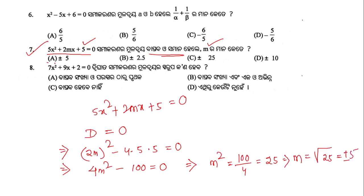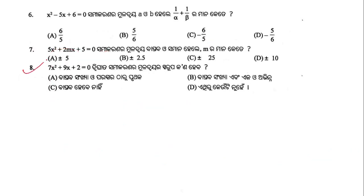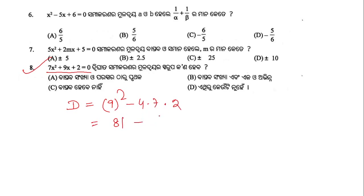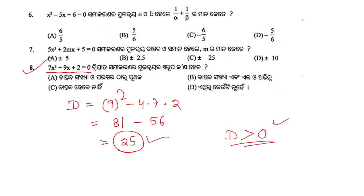Question number 8: 7x² + 9x + 2 = 0. To determine the nature of the roots, we calculate the discriminant D = b² - 4ac = 9² - 4·7·2 = 81 - 56 = 25. Since D = 25 > 0, the roots are real, distinct, and unequal. Option A is the right answer.